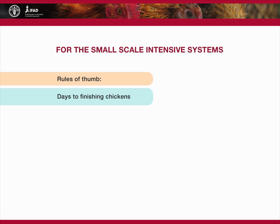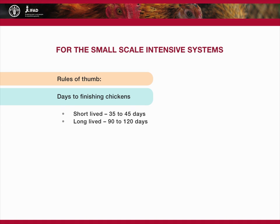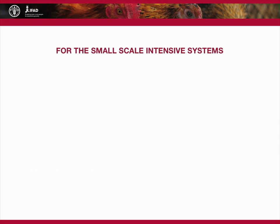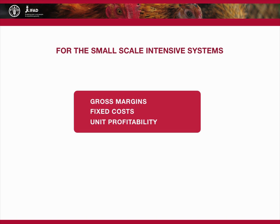There are a few rules of thumb regarding small-scale intensive systems. Chickens on short fattening cycles finish within 34 to 45 days, while chickens on long fattening cycles fatten within 90 to 120 days. The feed conversion ratio is in the range of 1.8 to 2. In layer systems, hens produce 280 to 300 eggs.